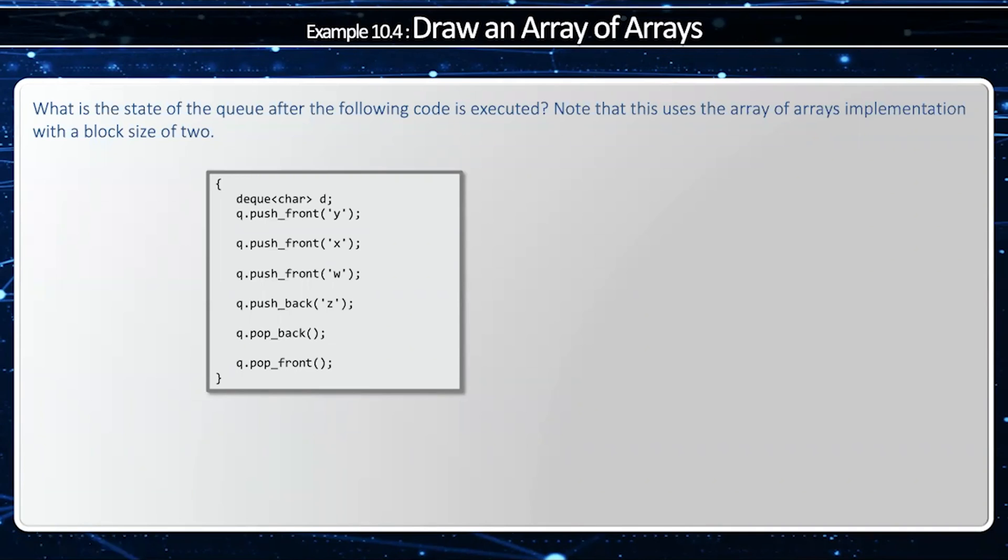This next example is actually quite a bit more complicated. So I have a deque of characters, and notice my block is of size 2. So when I push front y, well, I have no block, so I have to allocate a new block. So now I have a block that's empty of two cells.